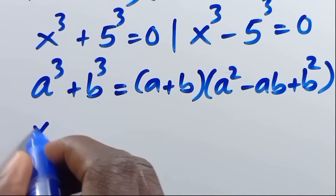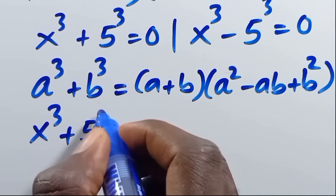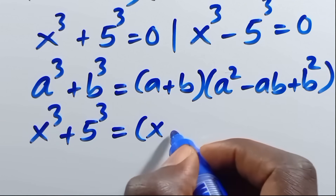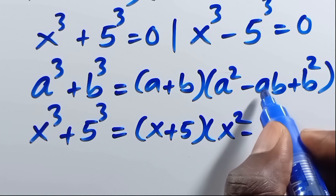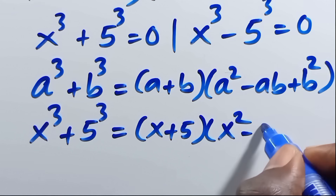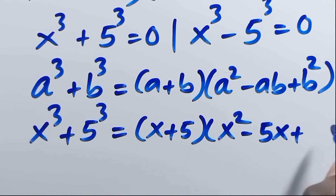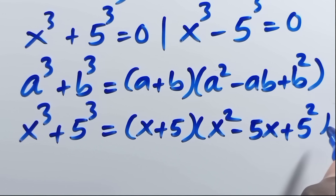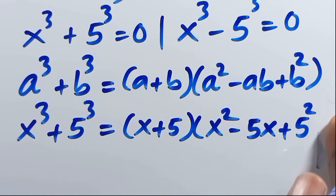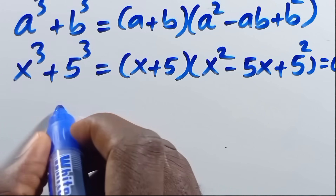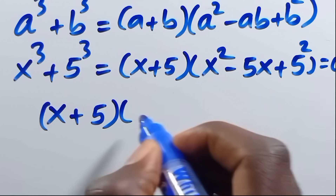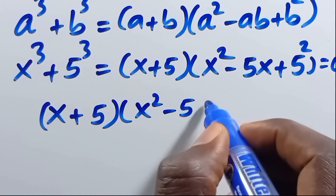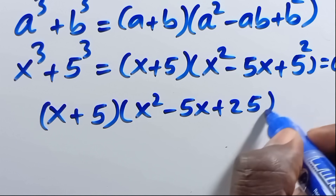Applying that here, x to the power of 3 plus 5 to the power of 3 equals x plus 5, times x squared minus 5x plus 5 squared. So we have x plus 5, times x squared minus 5x plus 25, equals 0.